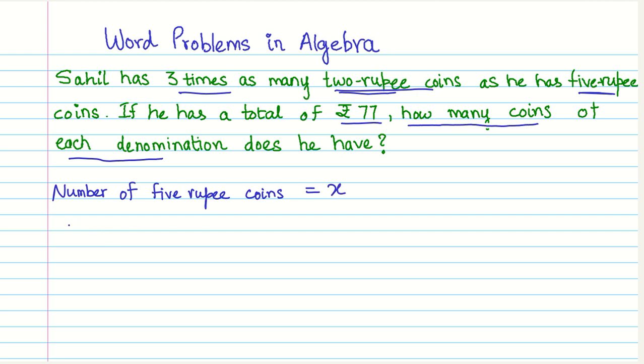So the number of two rupee coins will be three times x, three times the number of five rupee coins.